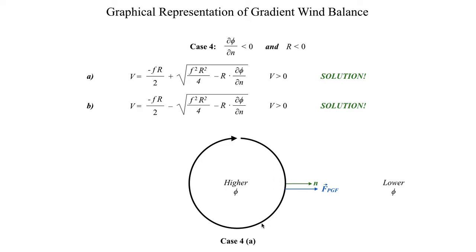If I'm rotating in the clockwise direction, in the northern hemisphere my Coriolis force acts to the right of motion, so my Coriolis force must point towards the center of the circulation. Centrifugal force always points in the outward direction. So here I have something that could actually be a force balance — a Coriolis force could theoretically balance out the pressure gradient force and the centrifugal force in this case.